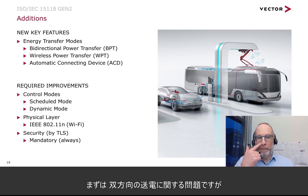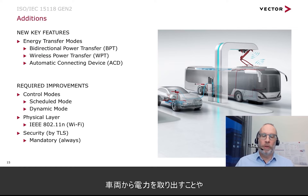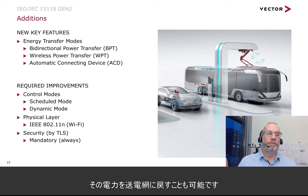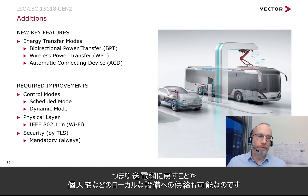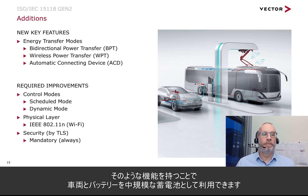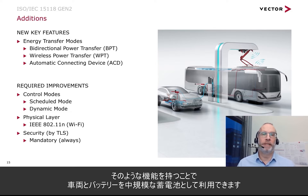On one hand, we have bidirectional power transfer. That means it is also possible to bring energy back from the vehicle — feed energy back from the vehicle into the grid, either into the grid itself or into the local installation, such as your private home. The vehicle battery can be used as an additional storage medium.